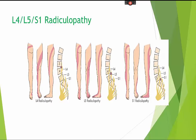A radiculopathy is a disease of the root of the nerve, such as from a pinched nerve or tumor. A lumbar radiculopathy is a diseased nerve root in the lower lumbar spine. A cervical radiculopathy is a pinched or irritated nerve in the neck causing pain, numbness, or weakness radiating into the chest or arm. A thoracic radiculopathy is more rare and involves the root of the nerve in the middle thoracic section of the spine.